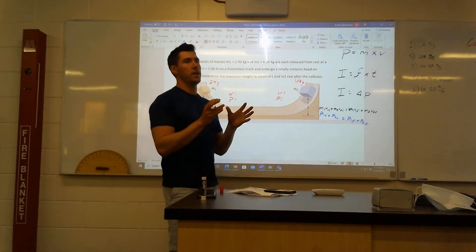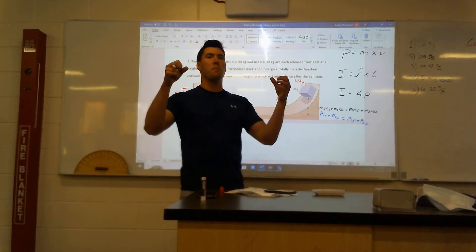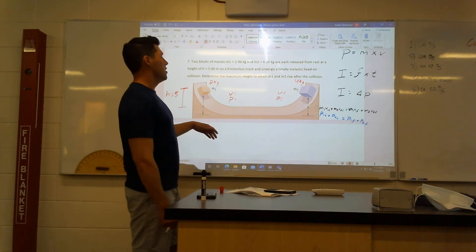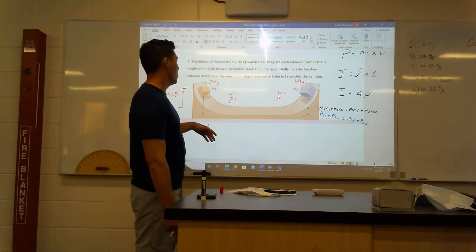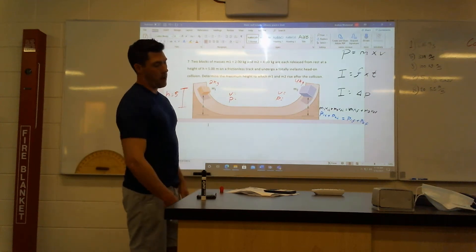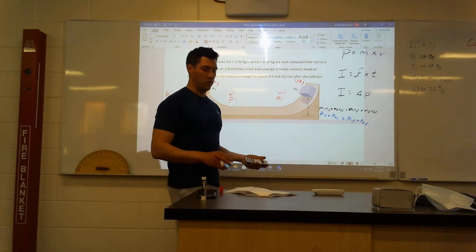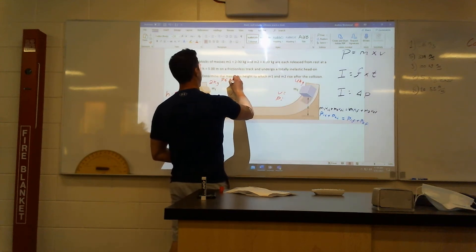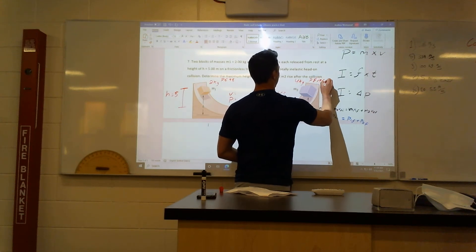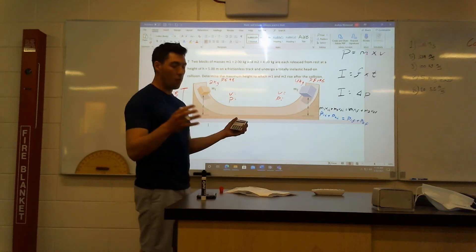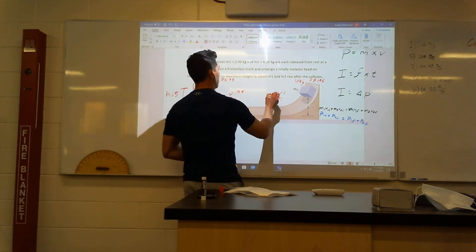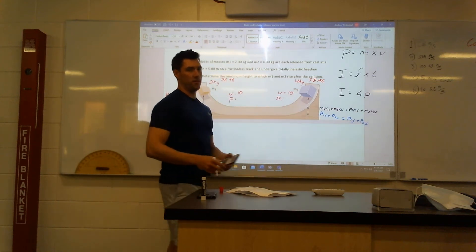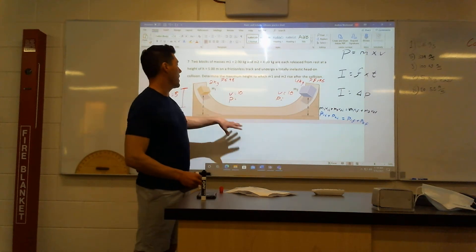It doesn't matter what mass you drop — without air resistance, it's going to reach the same velocity after the same height. I used energy here. Potential energy at the top for the 2 kg block is 98 joules; for the 4 kg block it's 196 joules. When you convert that to kinetic energy and find the velocities, both velocities are the same: 9.9, which I'll round to 10 meters per second. So both blocks have velocities of 10 when they get to the bottom.